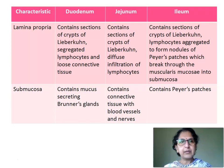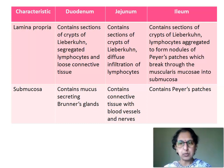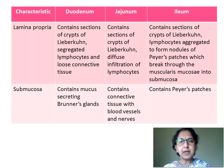Regarding the lamina propria: duodenum contains sections of crypts of Lieberkühn, segregated lymphocytes, and loose connective tissue. Jejunum contains sections of crypts of Lieberkühn with diffuse infiltration of lymphocytes. In ileum, lamina propria contains sections of crypts of Lieberkühn and lymphocytes aggregated to form nodules of Peyer's patches, which break through the muscularis mucosae into the submucosa. Regarding the submucosa: in duodenum, submucosa contains mucus-secreting Brunner's glands, which is the characteristic feature. Jejunum submucosa contains connective tissue with blood vessels and nerve endings. In ileum, submucosa may contain Peyer's patches.